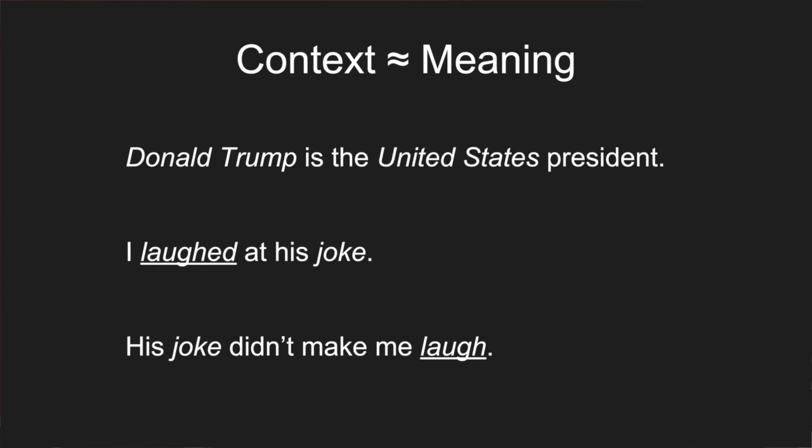You can see that laughed appears with the word joke in one sentence and laugh appears with the word joke in another. So ideally the word embedding would figure out that laugh and laughed are related, since they're both related to joke. That's kind of where a word embedding gets its knowledge from—it learns things via context, seeing what words occur near other words. But what does a word embedding actually do?